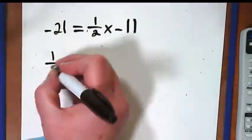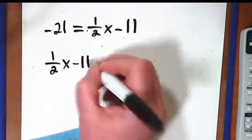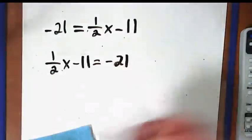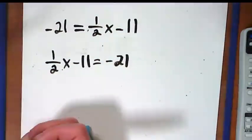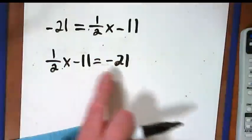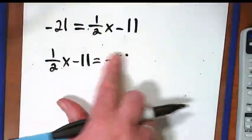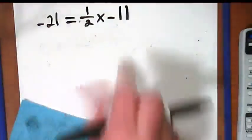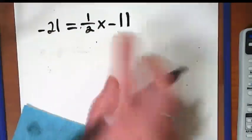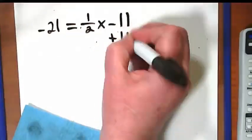What if the problem had been like this? What would you do first? Jeremy? Yeah, we would add 11 to both sides. We're going to do the same thing. I shouldn't do that. My finger will get gross. We're going to do the same thing up here. We're going to add the 11 to both sides.